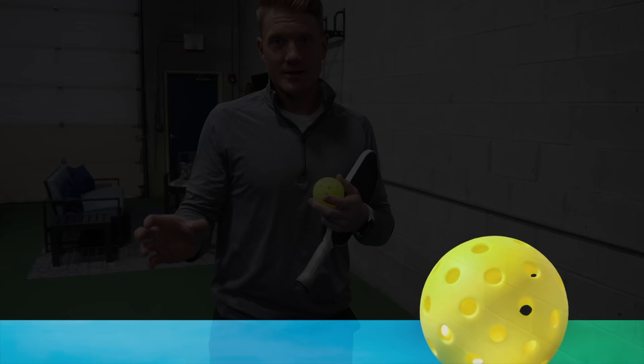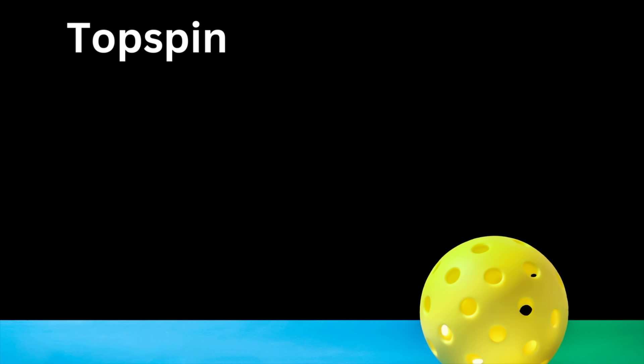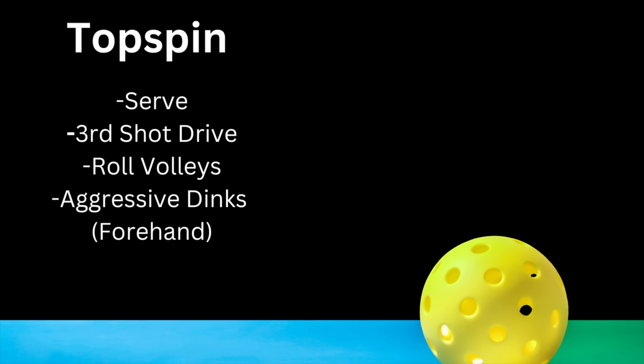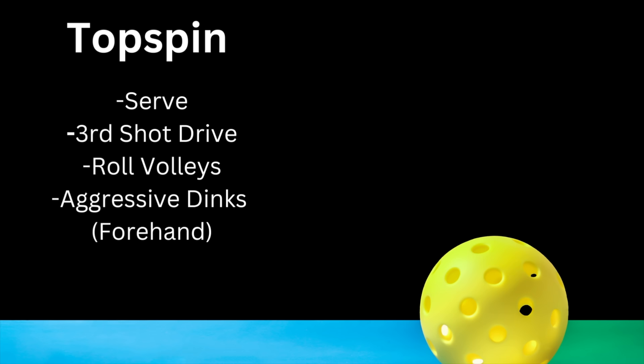The last thing I want to do is give you some specific use cases of when you would use each type of spin. Looking at topspin first, you're going to see it commonly used for serves, third shot drives, roll volleys, and aggressive dinks — especially on the forehand side. Really what topspin enables us to do is either hit the ball harder or get the ball to dip below net level quicker. Some of you may have a great backhand slice serve — everyone has their own strengths, weaknesses, and personal preferences; I'm just trying to give some basic guidelines here.